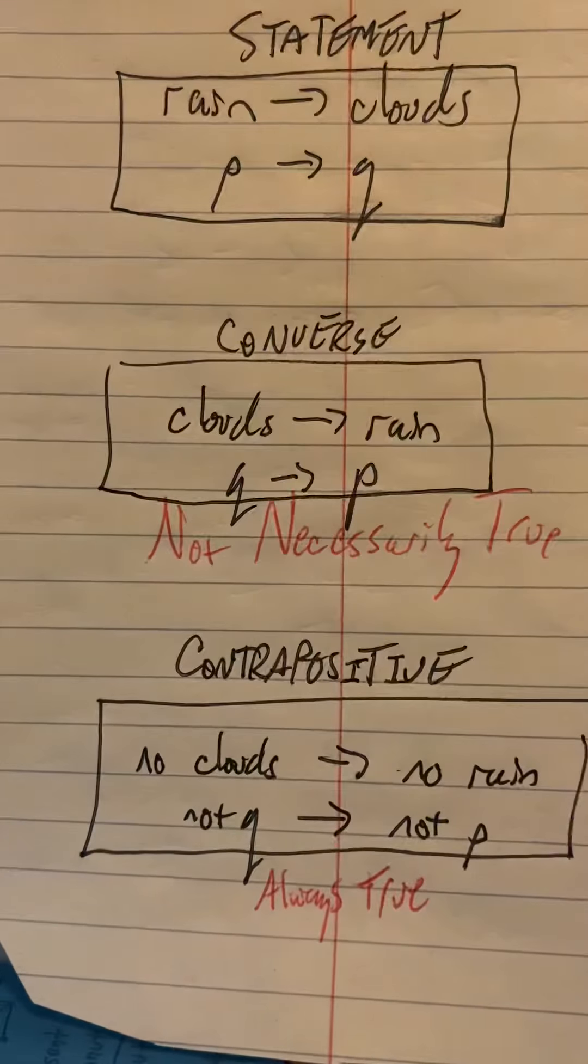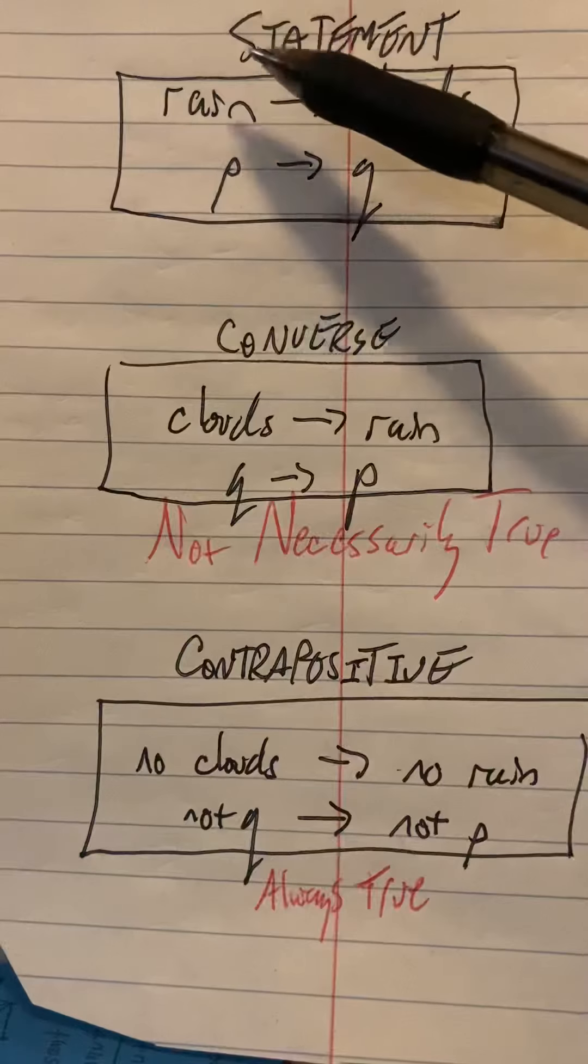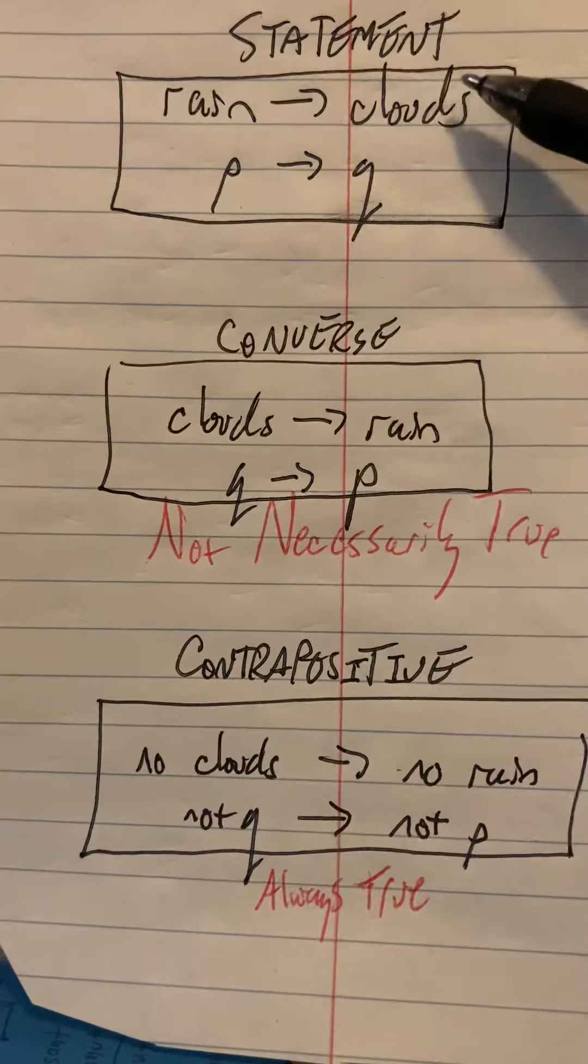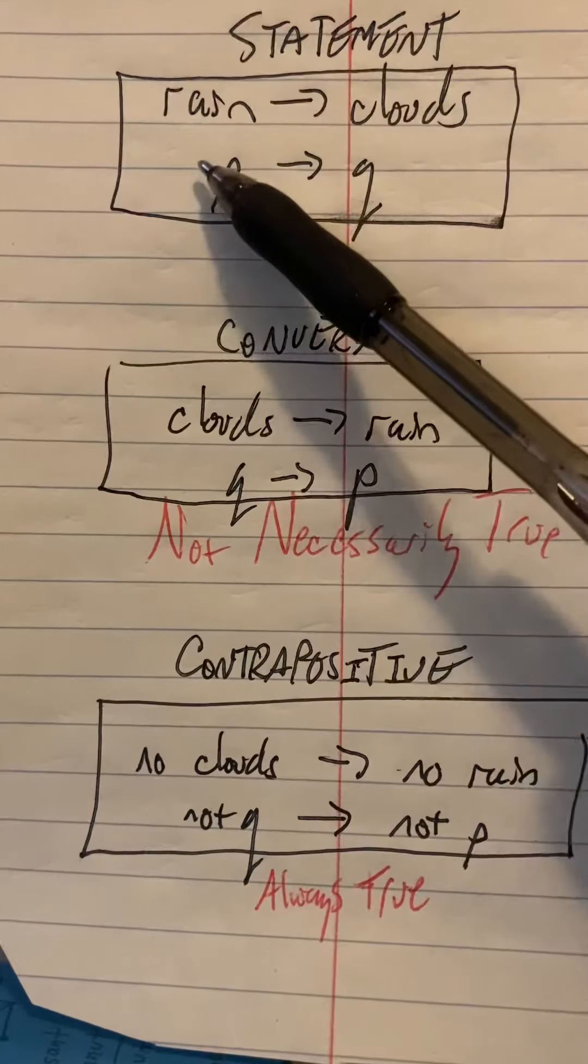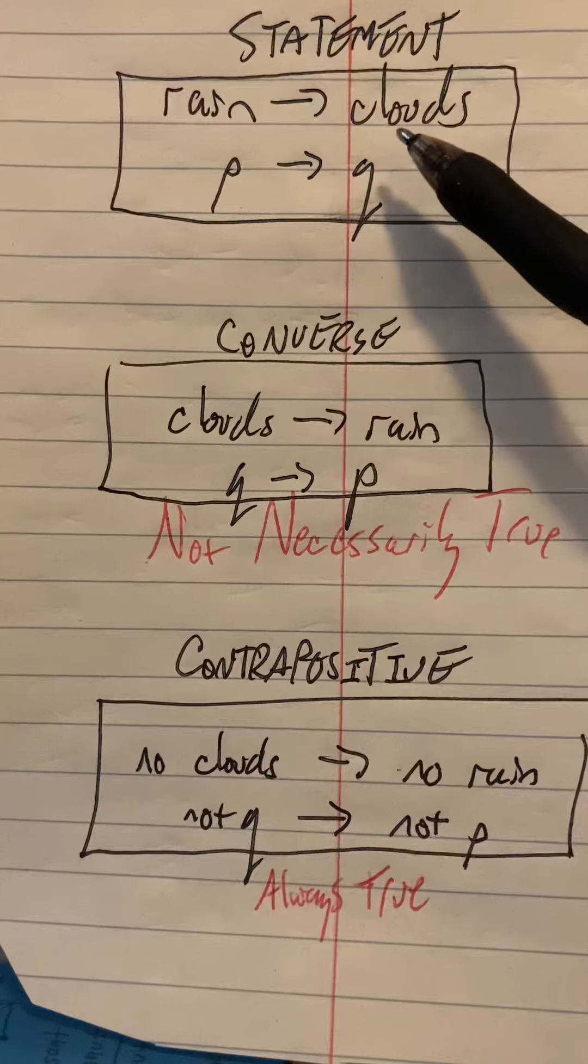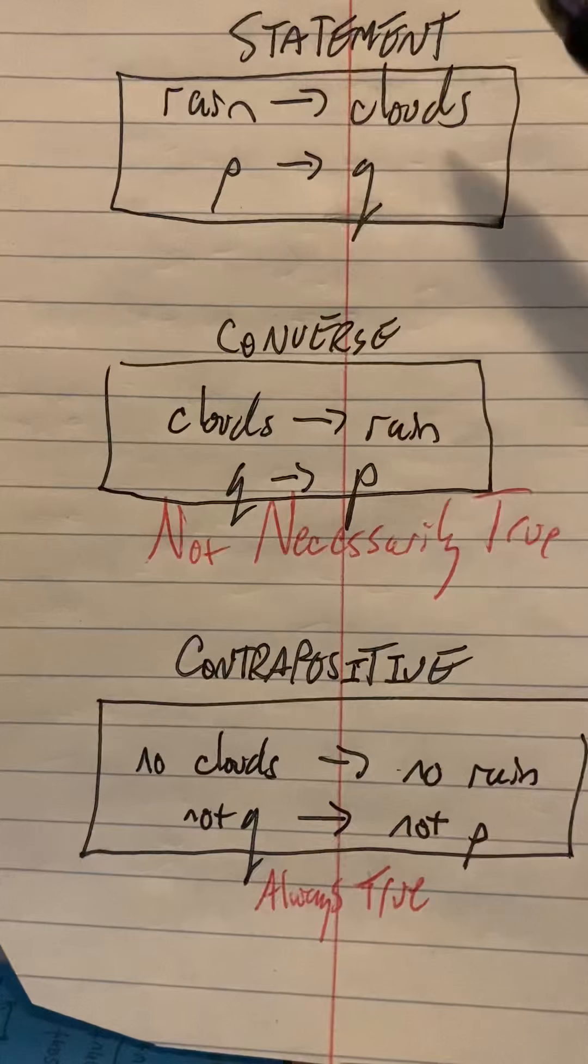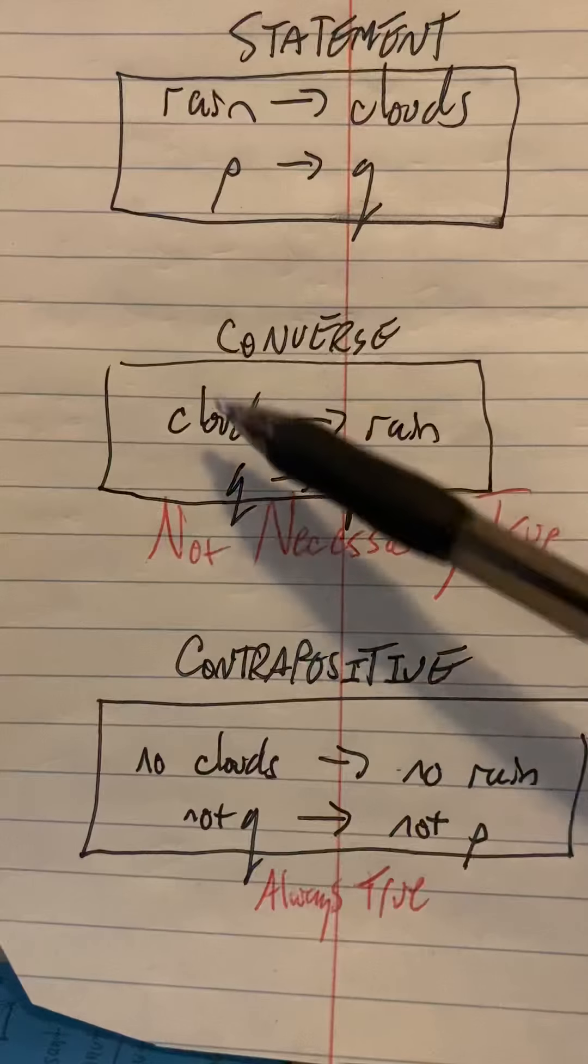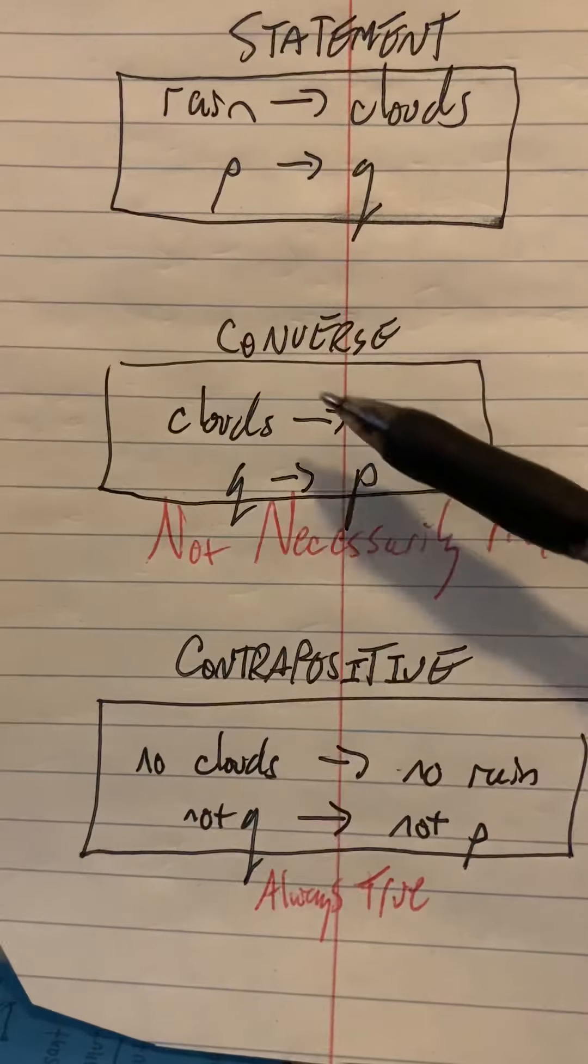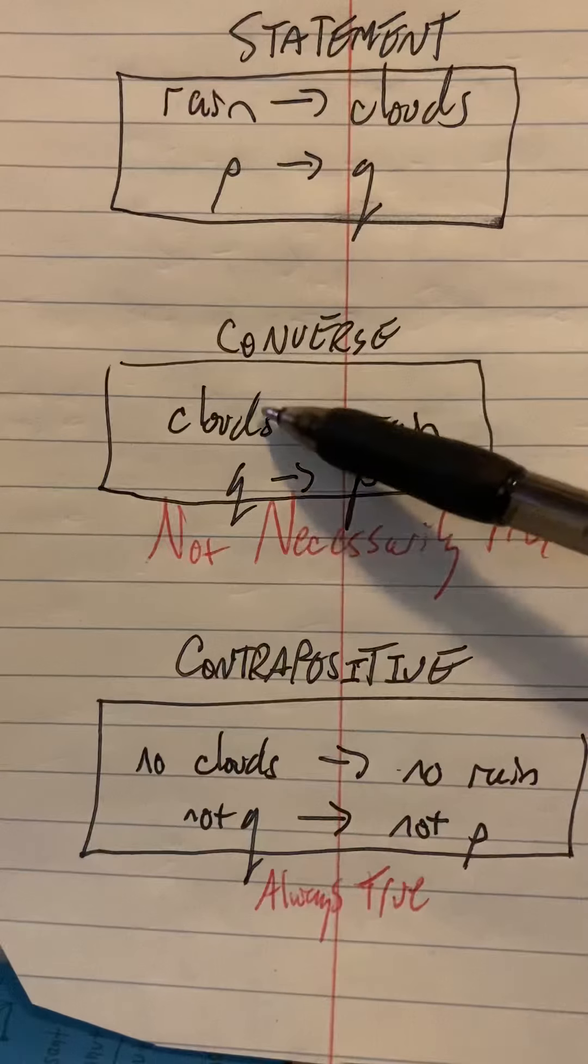Here we go. Let's think about a statement like it's raining outside, there must be clouds. This is called the statement p implies q. The converse of such a statement would be that clouds imply rain, q implies p. But that's not necessarily true. The converse of a statement is not ever necessarily true. It could be cloudy but not raining.